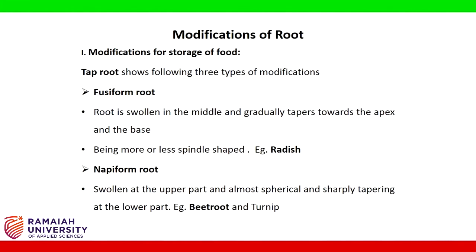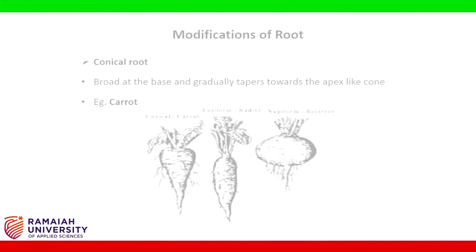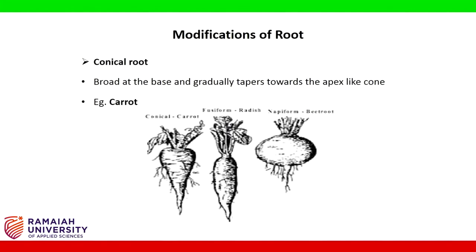Napiform root: swollen at the upper part, almost spherical, and sharply tapering at the lower part. Example: beetroot and turnip. Conical root: broad at the base and gradually tapers towards the apex like a cone. Example: carrot.